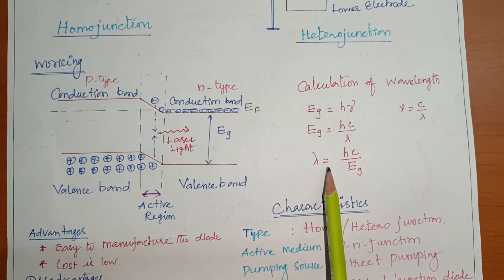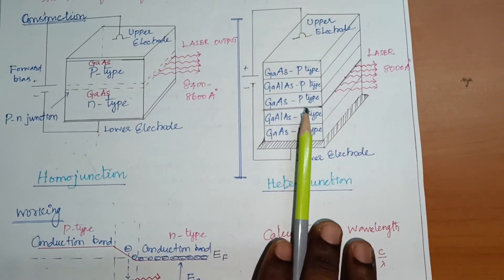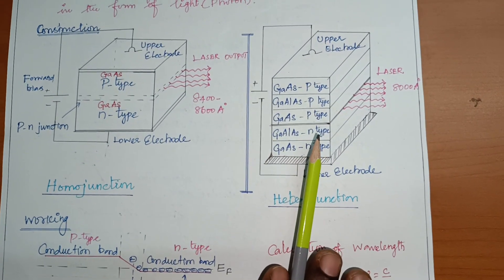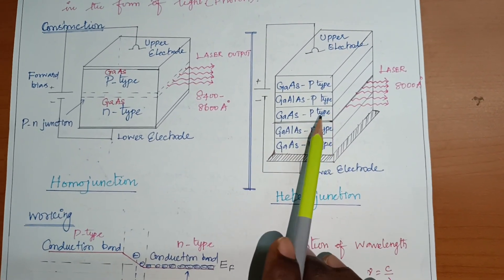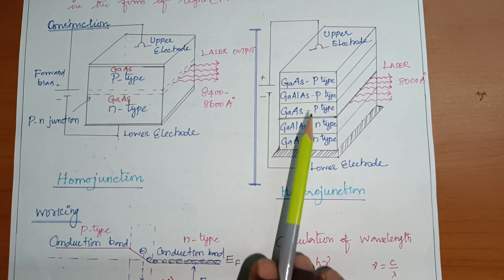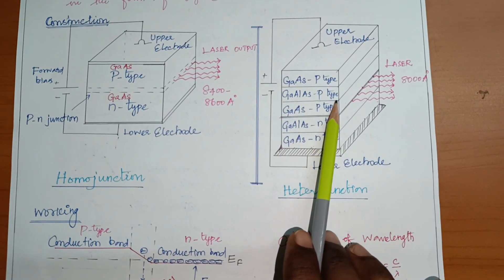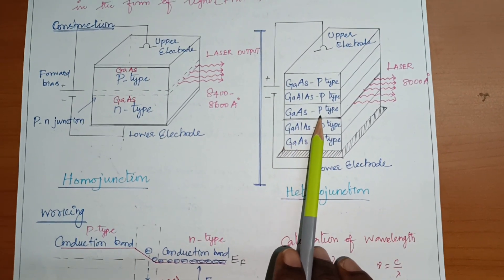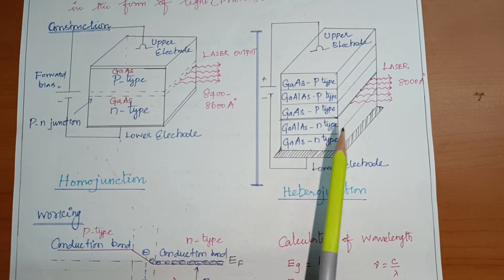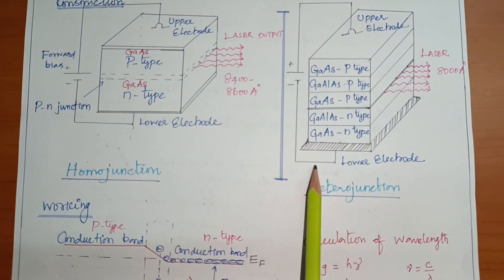The hetero junction semiconductor laser follows the same principle — recombination of electrons and holes produces laser. The construction has five layers: the first layer is gallium arsenide p-type, the second is gallium aluminum arsenide p-type, the third is gallium arsenide p-type, the fourth is gallium aluminum arsenide n-type, and the fifth is gallium arsenide n-type. The top electrode is connected to the positive terminal and the lower electrode to the negative terminal — this is also forward biased.